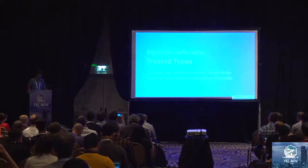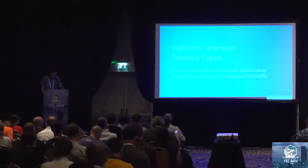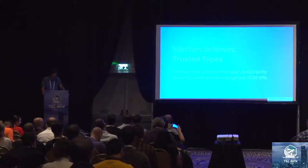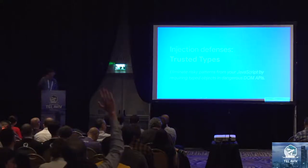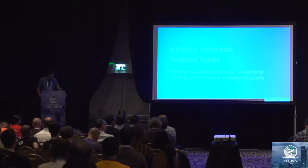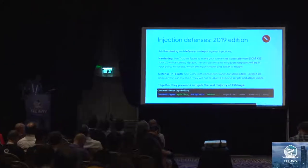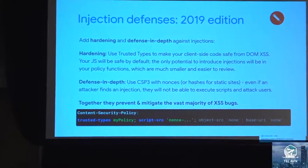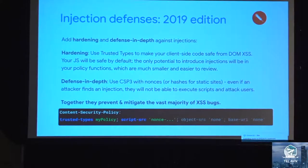There's also Trusted Types coming up in the web platform — an amazing new feature, especially well-suited for preventing DOM-based XSS. There's a talk by Christoph Kotovic and Mike Samuel after the lunch break in Hall C 130 — you should totally check that out. It's one of my favorite new web platform features, and what's really nice is it plays very well with classical CSP. You can set a single policy with Trusted Types and nonces, and together they are very effective in preventing and mitigating the vast majority of XSS issues. That should be your 2019 goal.